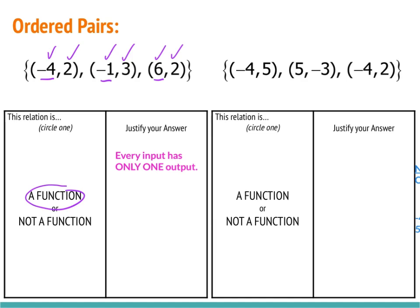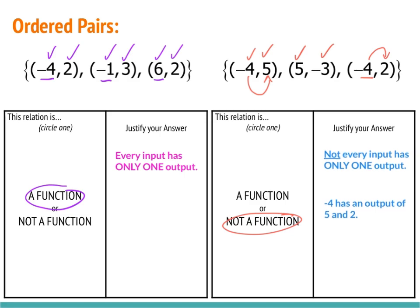Looking at our second set of ordered pairs, negative 4 goes with 5 and 5 goes with negative 3 — so far, so good. But then we have negative 4 again, and negative 4 now has an output of 2. So negative 4 has an output of 2 and an output of 5, which means different outputs for the same input. That makes this not a function. We justify our answer by saying that not every input has only one output: negative 4 has an output of 5 and 2.